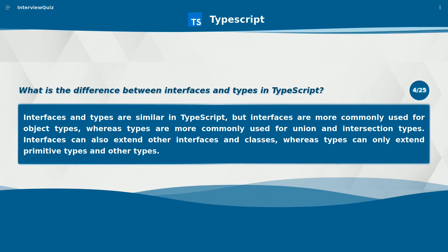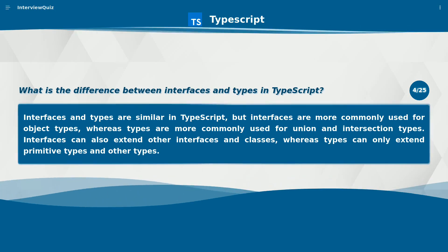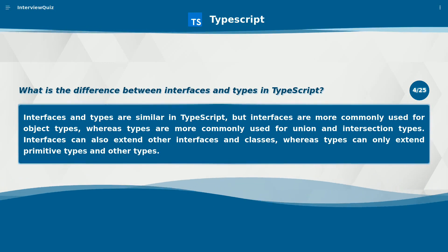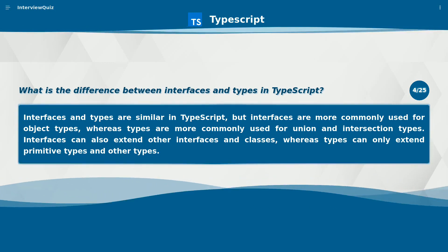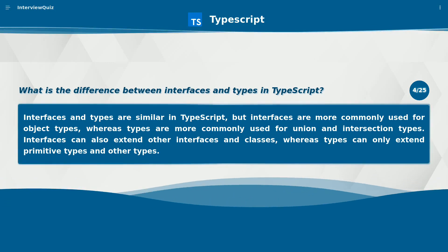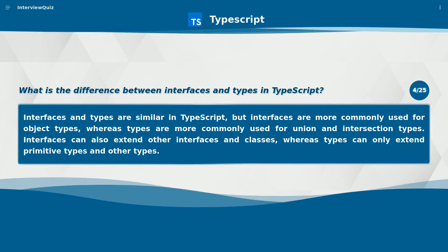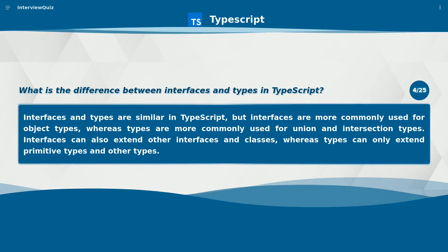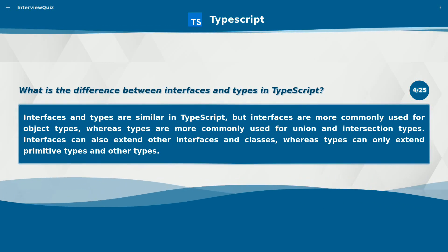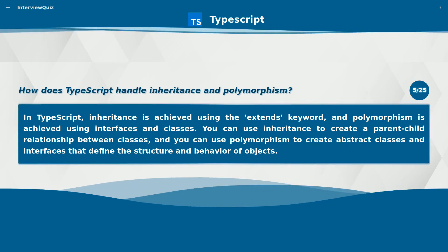What is the difference between interfaces and types in TypeScript? Interfaces and types are similar in TypeScript, but interfaces are more commonly used for object types, whereas types are more commonly used for union and intersection types. Interfaces can also extend other interfaces and classes, whereas types can only extend primitive types and other types.